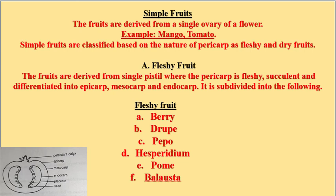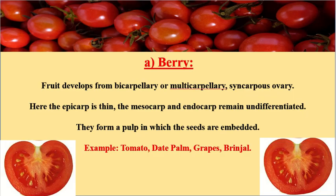The fleshy fruits are categorized into the following types: berry, drupe, pepo, hesperidium, pome, and balusta. First, we are going to see about the berry.